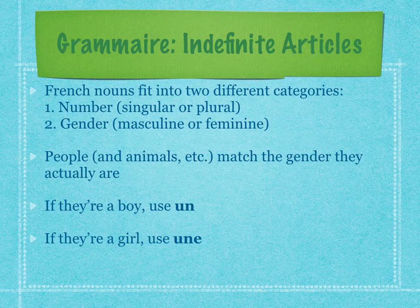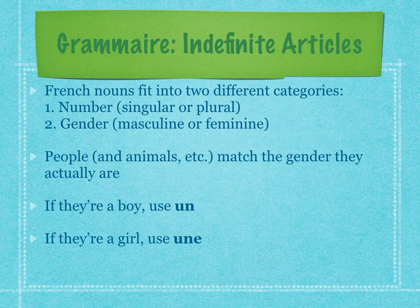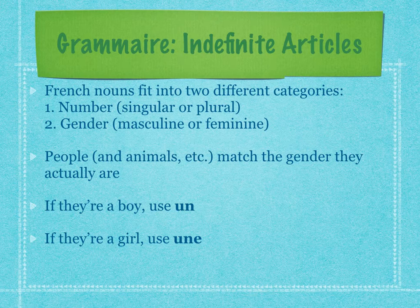By definition a boy has to be a boy, so we say un garçon. And if they're a girl, we use 'une' — so une fille. By definition a girl is a girl, so une fille. This is why words like élève, professeur, ami, etc. can switch articles. If I'm talking about my best friend Rob, I'll call him un copain. If I'm talking about my best friend Stephanie, I'll call her une copine, because each person is a different gender.